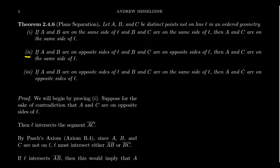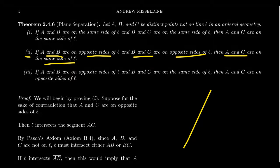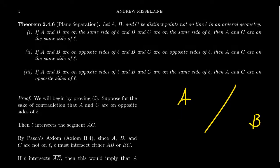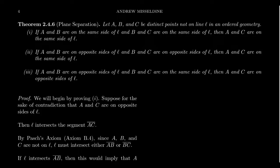I want to read the other two statements. Statement two: if A and B are on opposite sides of L, and B and C are on opposite sides of L, then A and C are on the same side. Intuitively, that makes sense with a picture. Statement three: if A and B are on opposite sides, and B and C are on the same side, then A and C are on opposite sides. In Euclidean geometry this seems straightforward, but we're proving this for ordered geometry. We're going to prove statement one, and leave two and three as exercises — they're very similar proofs.